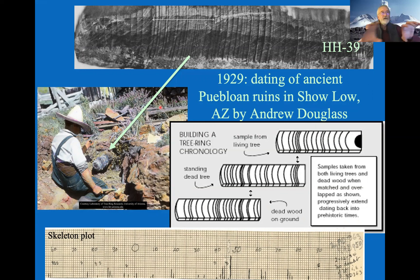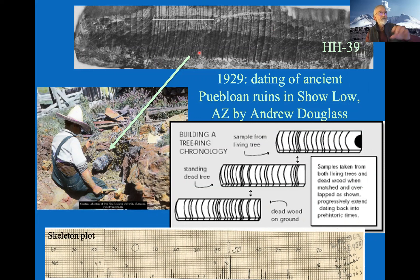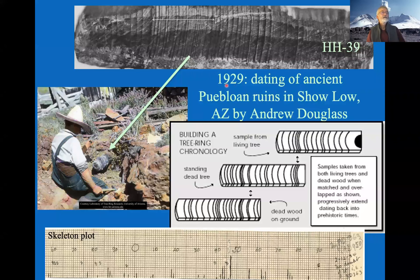In 1929 at Show Low, they found a log called HH39. That night Douglas looked at the tree rings and was able to link living old-growth tree rings with his huge master chronology from the ruins. To my knowledge, this represents the first dating of a prehistoric event to the year using scientific technology—a truly huge advance.